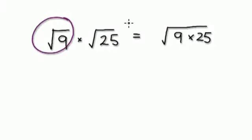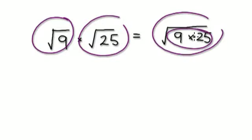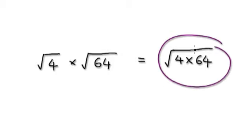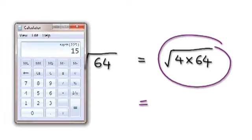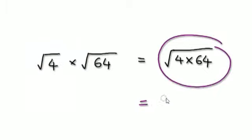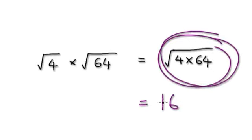So this times this is the same as doing these two first. Now let me ask you this question — would this be true? Square root of 4 times the square root of 64, is that the same as the square root of 4 times 64? Let's get a calculator out and work this out. 4 times 64 equals that, and then square root of it — that would be 16. So this whole thing here is 16.